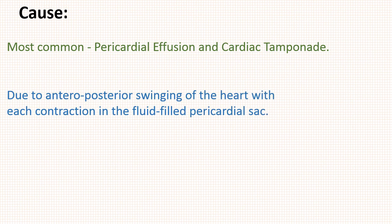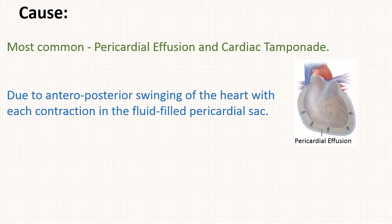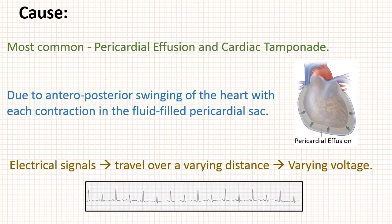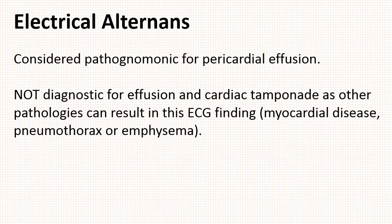This classic ECG pattern is due to anteroposterior swinging of the heart with each contraction in the fluid-filled pericardial sac. As the heart swings, the electrical signals detected by electrodes travel over a varying distance, resulting in varying voltage. Even though electrical alternance is considered pathognomonic for pericardial effusion, it is not diagnostic because many other pathologies can result in these ECG changes.